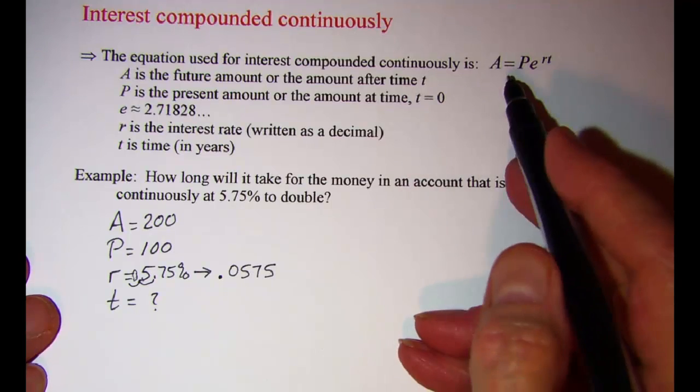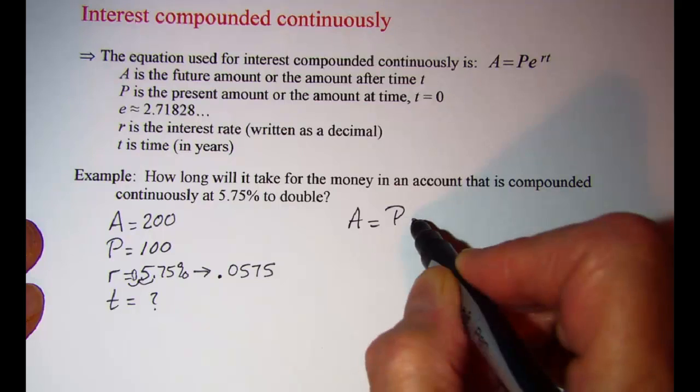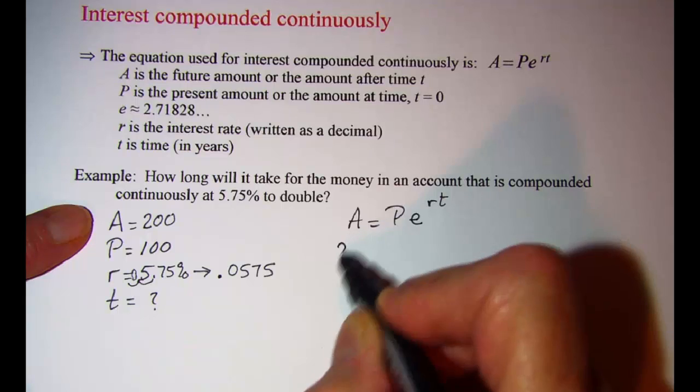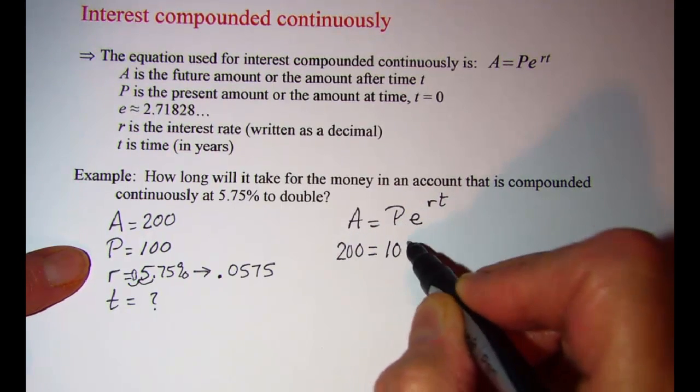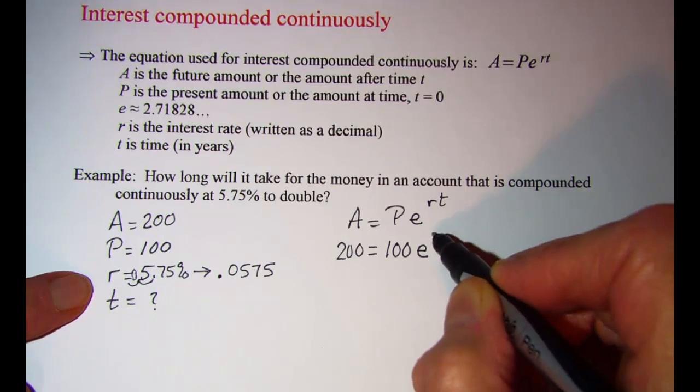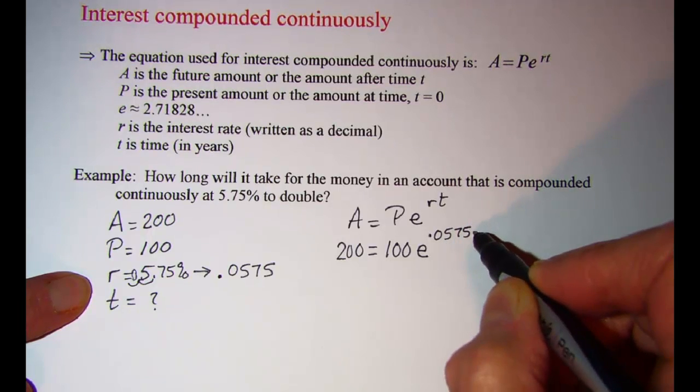So our formula then, A equals PE to the RT. Our A is 200. Our P is 100. Times E raised to the 0.0575 times T.